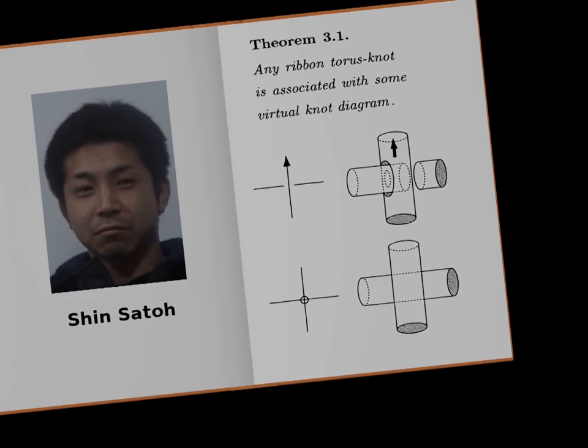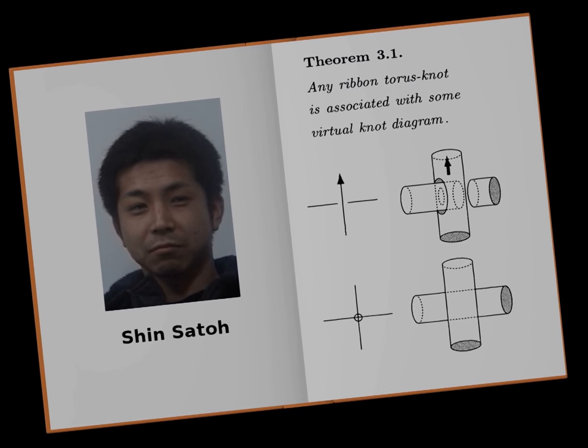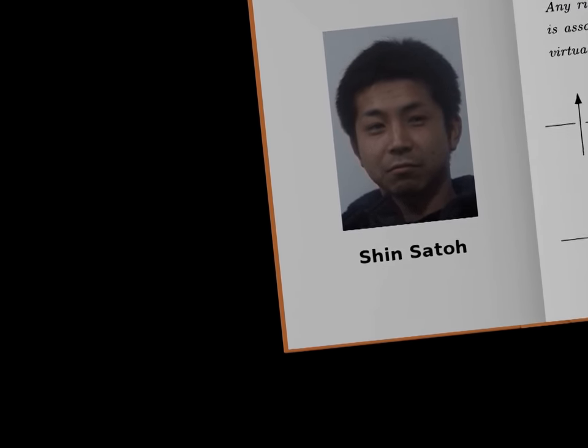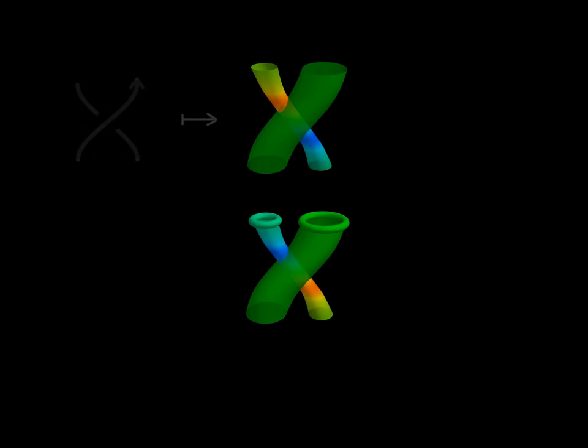The tube function was first defined by Shin Sato, a Japanese mathematician, in a paper in 2000. Our definition of the tube function has an issue. The rings that form the tubes can pass through each other in different ways. We have diagrams for some of them, but not for all of them.